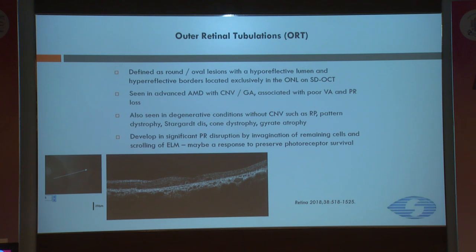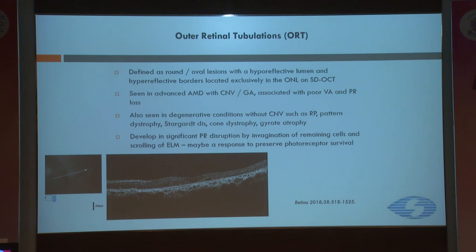ORT was already described, but outer retinal tubulations are something we need to be very mindful of, because they should not be misdiagnosed as CME — if you see CME, the tendency is to treat these patients. These are round oval lesions with a hyper-reflective lumen and hyper-reflective border. They are seen in advanced AMD, CNV, geographic atrophy, associated with poor vision and photoreceptor loss, and even degenerative diseases and dystrophies like retinitis pigmentosa, Best disease, Stargardt's, etc. They develop because of photoreceptor disruption by invagination of the remaining cells and scrolling of the ELM. It may be a response to preserve photoreceptor survival, but they have poor prognosis, and this could be one indication to stop therapy in such patients.